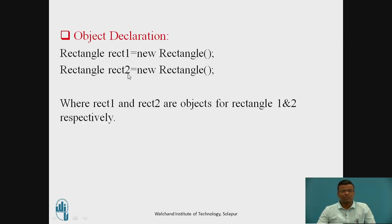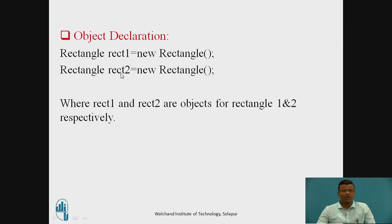Similarly, Rectangle rect2 is equal to new Rectangle, where Rectangle is the class name, rect2 is the object name, new is a constructor and Rectangle is again the class name. The constructor new combines the class name and object name. Here we can see that rect1 and rect2 are the object names for rectangle 1 and rectangle 2.